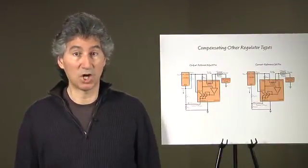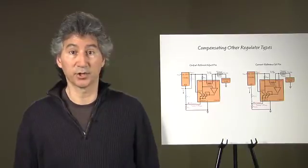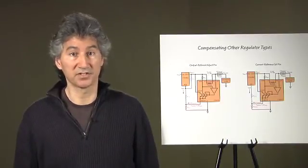In the lab demonstration, the I-OUT pin was used to provide a sinking current to control the output of a regulator with a ground-referred adjust pin.